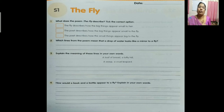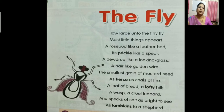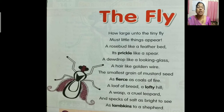Now we will look at the poem again. In this poem we will learn about simile — we will find out what similes are used. What are the things compared in the poem? Rose bud is compared to a feather bed, prickle is like a spear, dewdrop to a looking glass, hair to golden wire, loaf of bread to lofty hills.